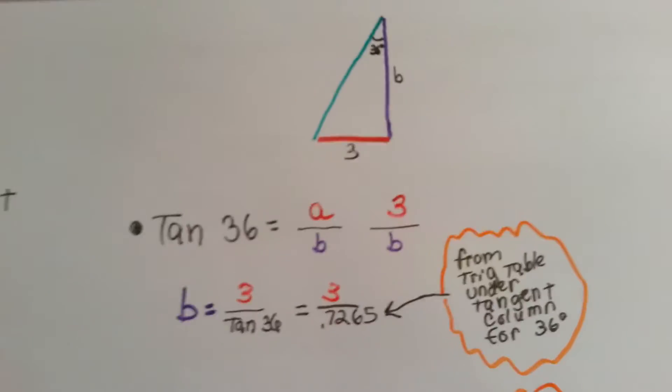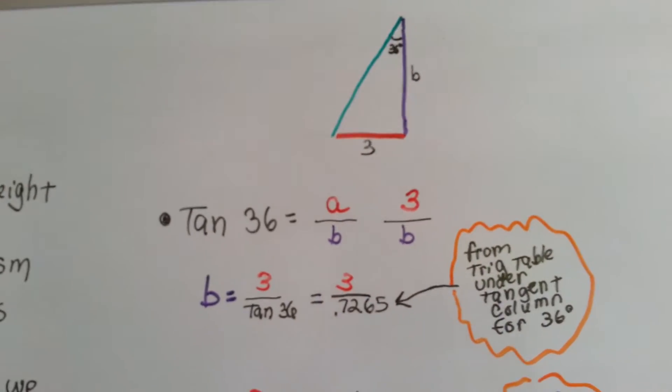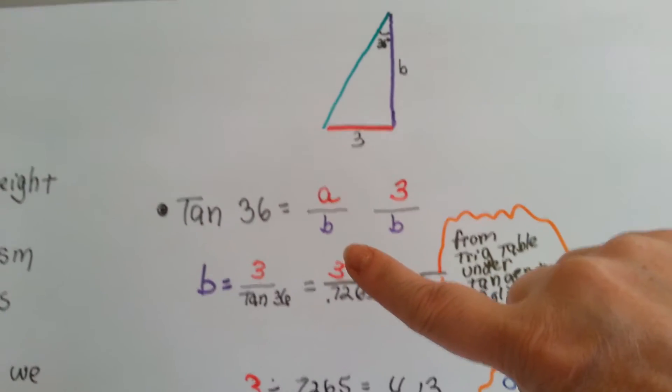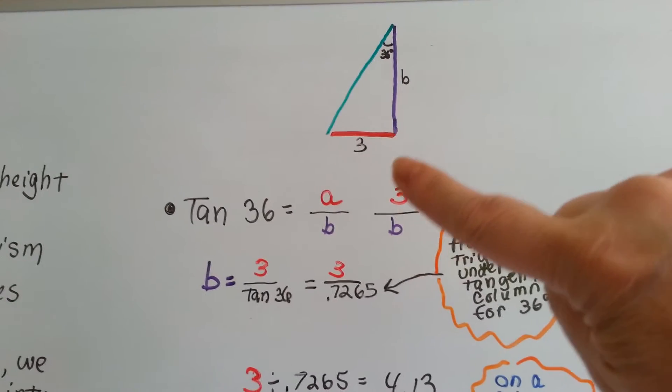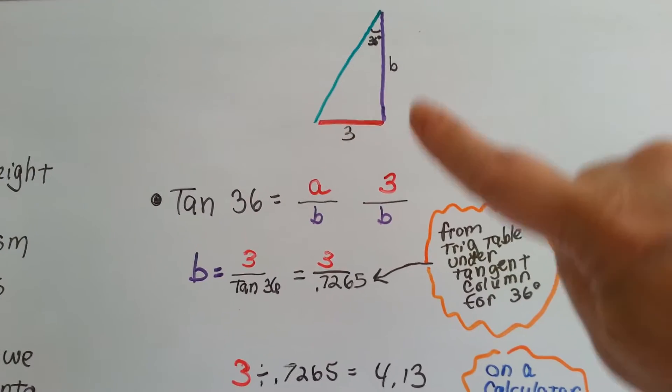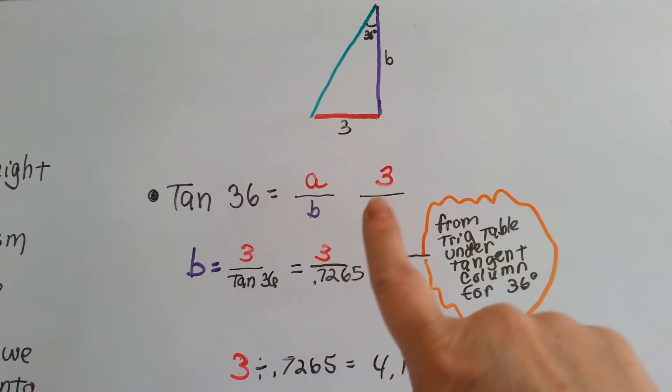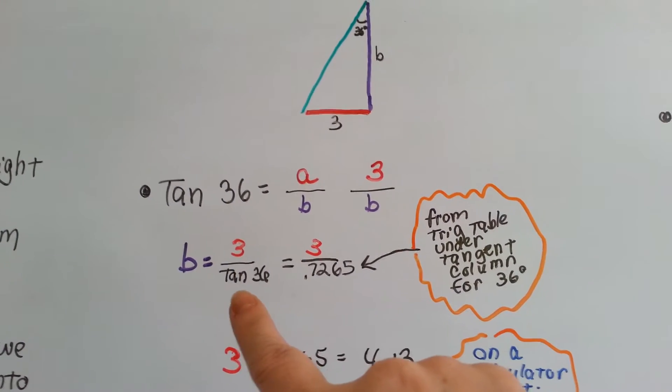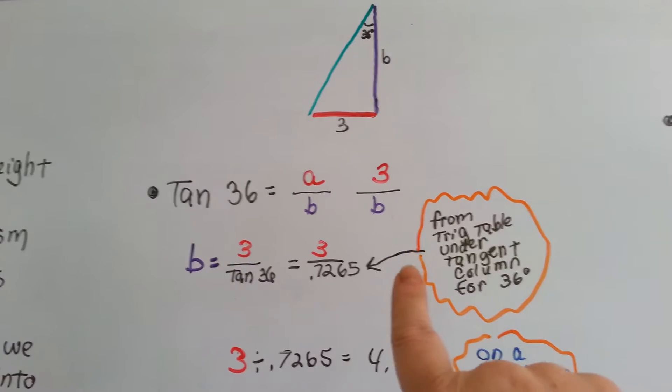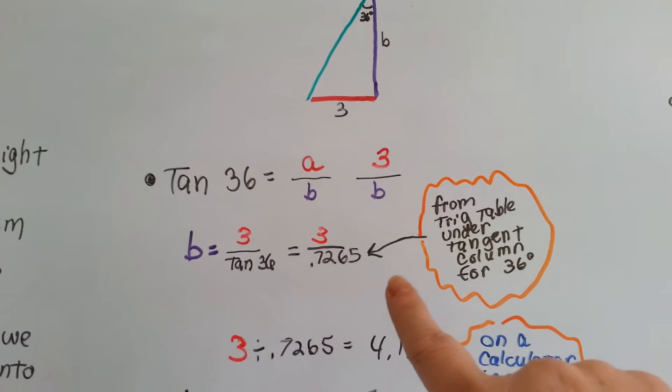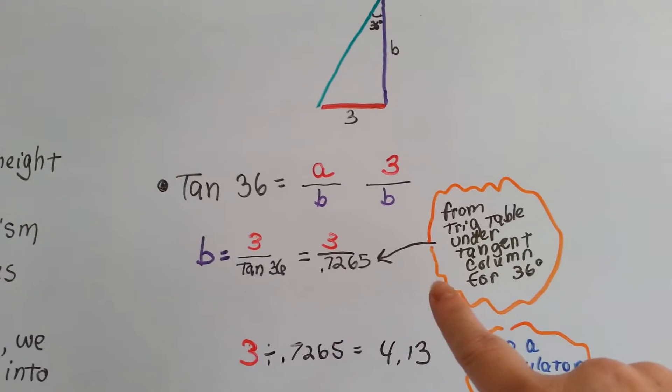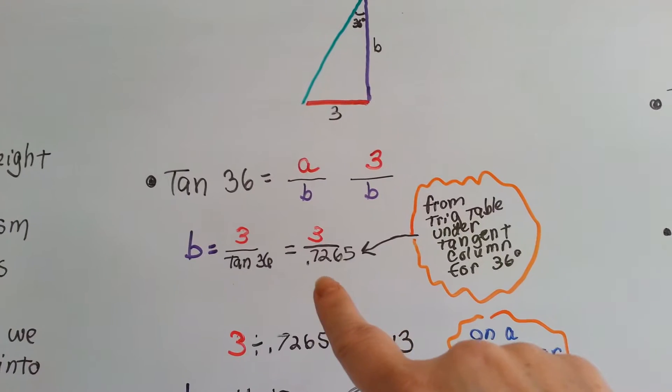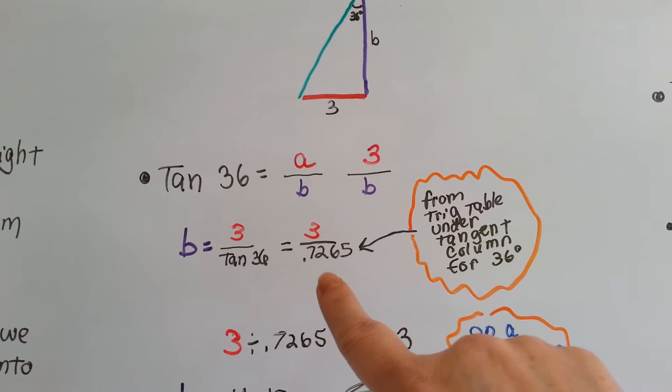Tangent 36 is opposite over adjacent, right? So, we need to put the 3 over the b. When we rewrite the equation, we get b is equal to 3 over tangent 36. If you don't have a scientific calculator, you go to a trig table online or in the back of your book, and you look under the tangent column for 36 degrees and you'll get that decimal point, 0.7265.